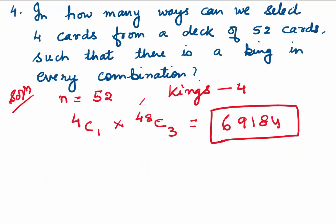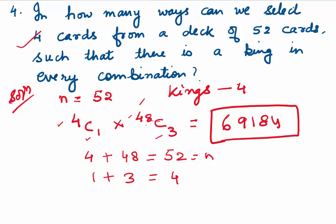Let me show one last observation using Example 4. The total cards were 52 (N equals 52). In the solution 4C1 times 48C3, if you add the top values 4 and 48 you get 52 — your N. And if you add the bottom values 1 and 3, you get 4 — the number of cards to select. This pattern holds in all such questions.